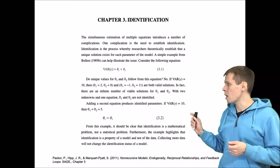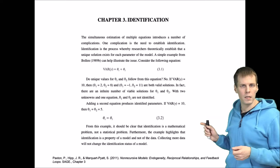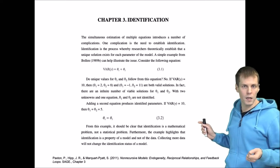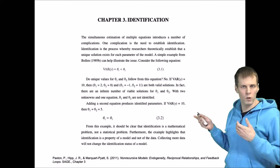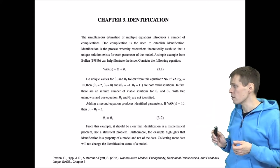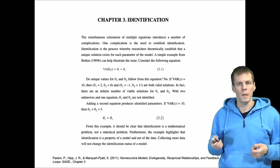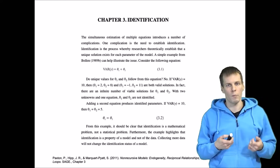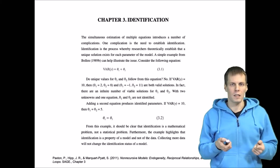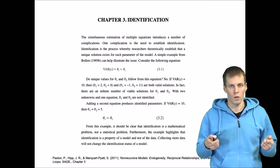My example comes from a book by Paxton and co-authors, which I think is the best source on the mathematical identification of covariance structure models. They have a chapter on identification and discuss recursive and non-recursive models, providing examples with some math that is fairly readable if you understand covariance algebra.